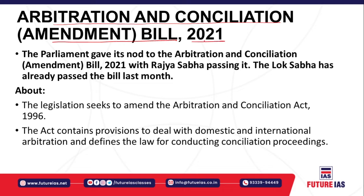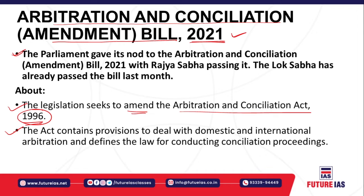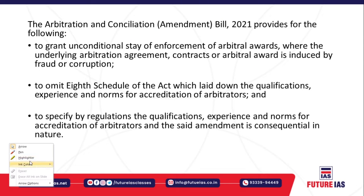Next is the Arbitration and Conciliation Amendment Bill 2021. Parliament gave its nod — both Lok Sabha and Rajya Sabha have passed this bill, which amends the Arbitration and Conciliation Act 1996. Now this bill will go to the President of India for assent. The bill tries to amend provisions related to domestic and international arbitration and also covers conciliation proceedings.